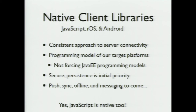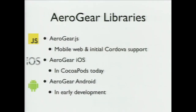We're a relatively new project at JBoss, actively in development. We have all of these libraries today at different stages. We've got AeroGear.js for mobile web and Cordova support, so you can run these inside a Cordova application for secure back-end access. We also have an iOS library in CocoaPods — kind of like a Maven repository for iOS. The Android project is, surprisingly for a room full of Java developers, actually in early development.